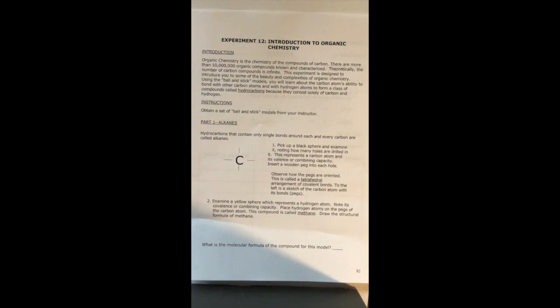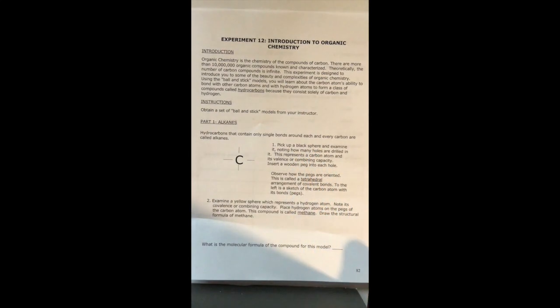If you notice in your directions it says you're going to start with a black sphere and examine that it has four holes. This represents carbon. Again, all of our compounds we're going to make today contain carbon. The other element they're going to contain is hydrogen. We're not going to be in the lab, you can do this lab at home, and instead of using the models we would normally give you, you can use candy.